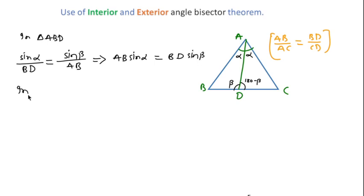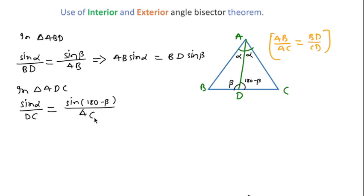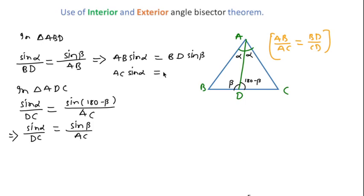In triangle ADC we can also write: sine alpha over DC equals sine(180 minus beta) over AC, which equals sine beta over AC. Cross multiplying gives AC sine alpha equals CD sine beta. Dividing both equations, sine beta and sine alpha cancel, so we get AB over AC equals BD over CD.